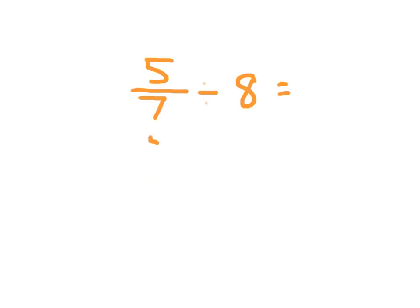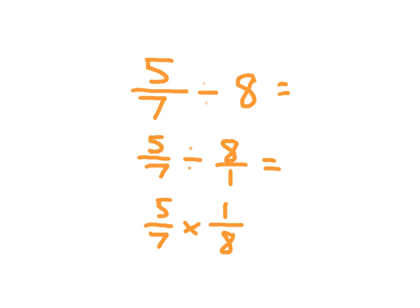5 sevenths divided by 8. I'm going to rewrite that first as 5 sevenths divided by 8 over 1, and then it's very easy to see that inverse. So we multiply by 1 over 8. 5 times 1 in the numerator is 5, and 7 times 8 in the denominator is 56. 5 is only divisible by 5, and since 56 is not divisible by 5, we know that is already in simplest form.